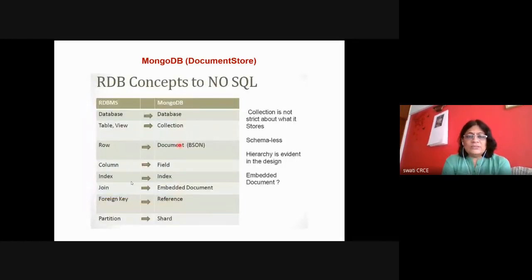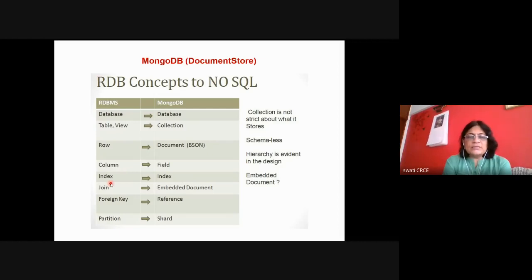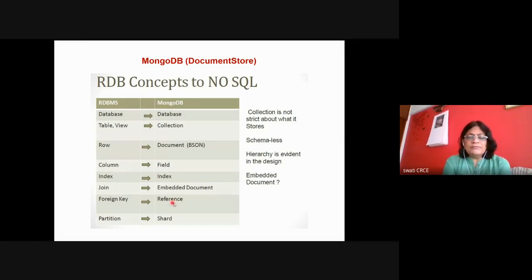Always keep in mind the mapping of RDBMS to MongoDB: A database in RDBMS is called a database in MongoDB. A table in RDBMS is called a collection in MongoDB — a collection of documents. A row is a document, stored as BSON (Binary Script Object Notation). A column is a field. Indexing on values is possible. Joining exists in RDBMS but in MongoDB a document can be embedded inside another document. For foreign-key relationships, references are used — one document can be referred to inside another. A partition in RDBMS corresponds to a shard in MongoDB.